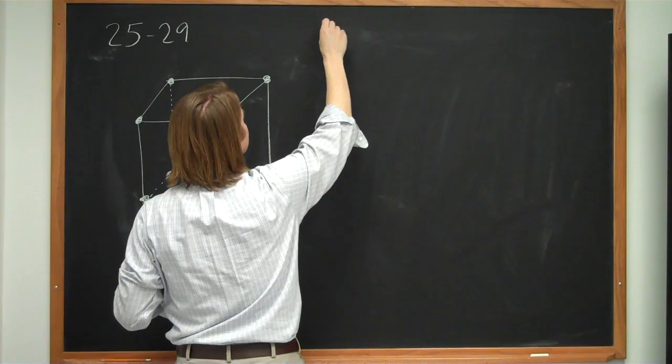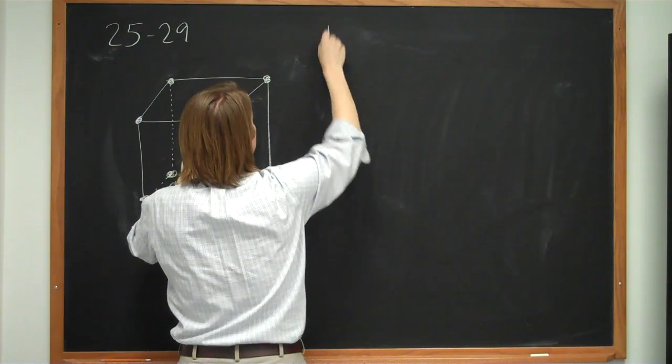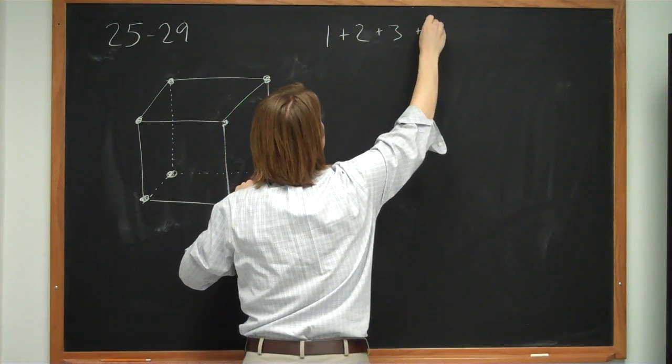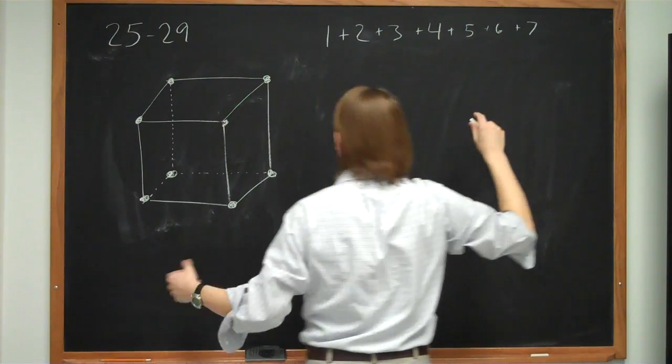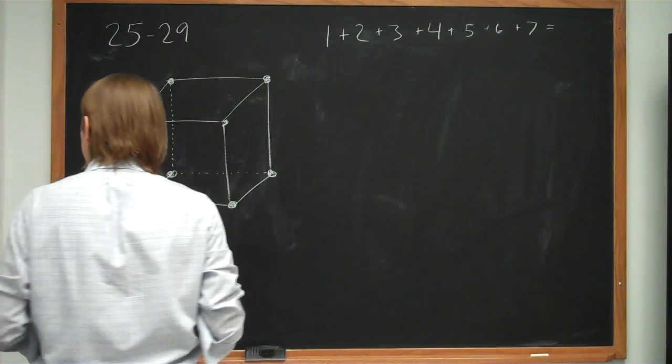But you can get the total number of pairs you need to keep up with by saying, you bring this one, it has to go with one. And then the next one has to have two, and the next one has to have three, four, five, six. And then the last one you bring in has to interact with seven. So that tells you how many pairs there should be.